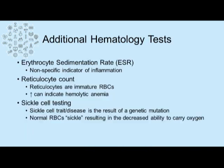Additional tests that can be performed in the hematology lab include the erythrocyte sedimentation rate, or ESR, which is a nonspecific indicator of inflammation. A reticulocyte count — reticulocytes are immature red blood cells, and an increase in reticulocytes can indicate a hemolytic anemia. Another type of test often performed is sickle cell testing. Sickle cell trait or sickle cell disease is the result of a genetic mutation, which produces sickling in red blood cells and causes a decreased ability to carry oxygen.